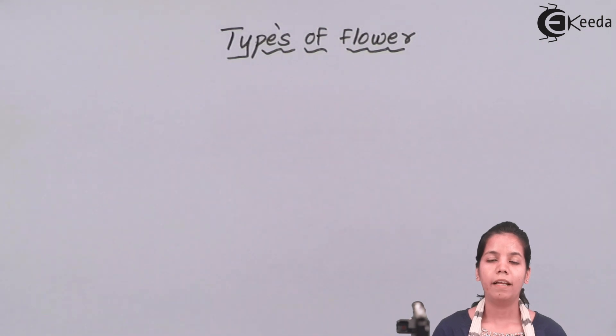Types of flower. Before we start, what are the types of flower and how are they differentiated, we need to know about whorls. Whorls are nothing but parts of a flower.